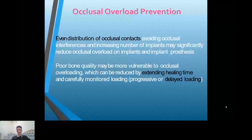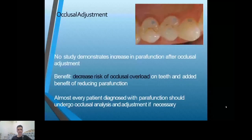Progressive loading is recommended: increase force gradually rather than suddenly placing full load on the implant. Use a provisional prosthesis for a period, then replace with the final restoration after perhaps six months. Occlusal adjustment can decrease cusp height and cusp inclination, reducing lateral force and occlusal overloading.